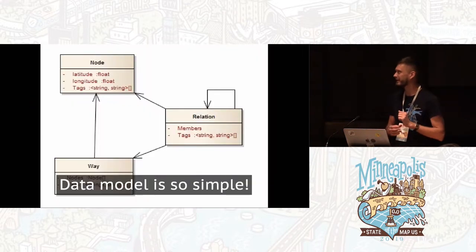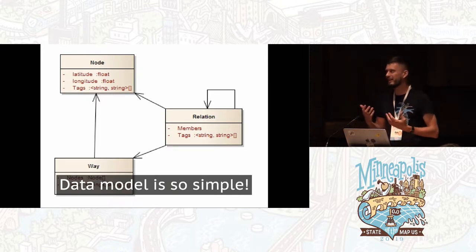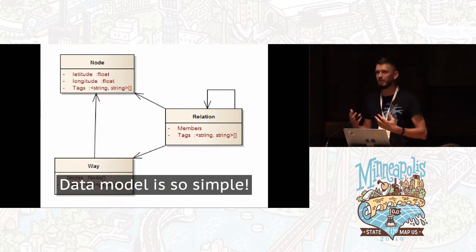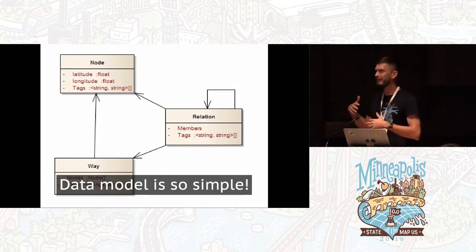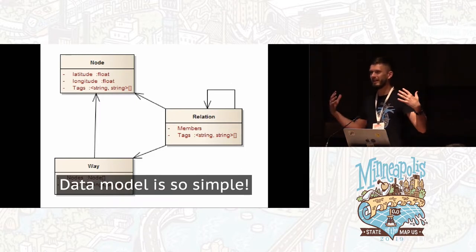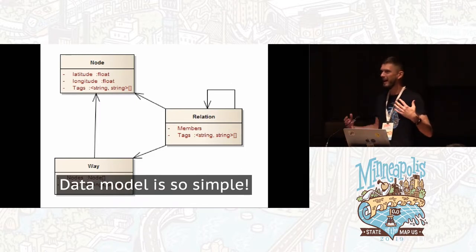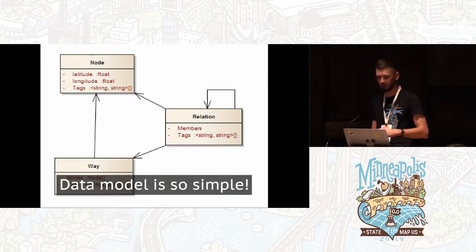Starting with basics, like data model. You come to OpenStreetMap and the data model looks very simple — just nodes, ways, relations, and tags. It looks much simpler than Simple Features by OGC. But then you start using it, start making complex edits, and you find out that everything is connected — it's actually a topological model. As a file it's one big single XML file, and it requires a lot of memory to process. So the simplicity of the data model looks not that good; it's not that simple.